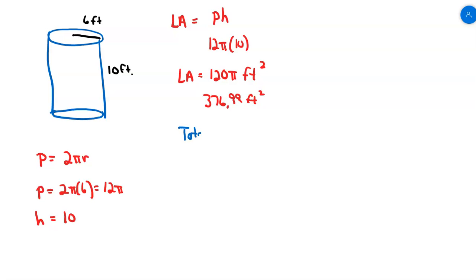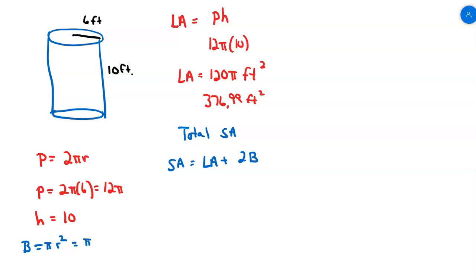Total surface area includes the lids on the top and the bottom. So my total surface area is my lateral area plus the area of both bases. The area of a base is pi r squared, so pi times 6 squared equals 36 pi.